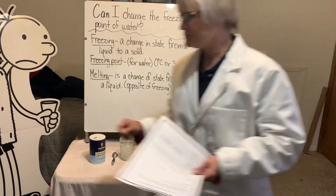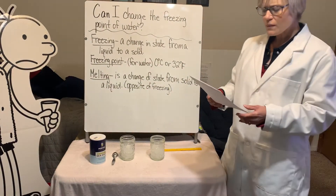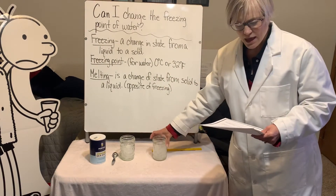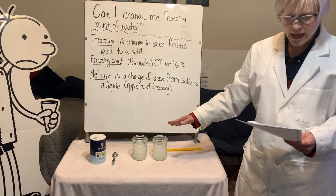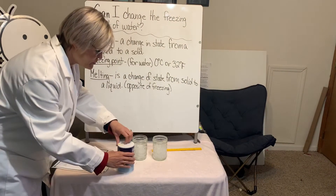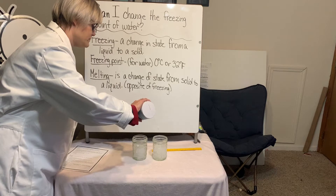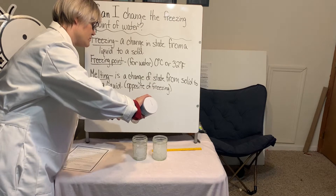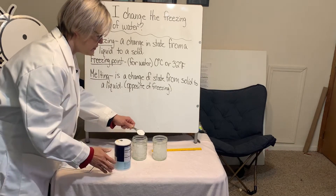Fill one cup halfway with only ice. Fill another cup halfway with the same amount of ice and add one tablespoon of salt. I've got my tablespoon and I'm going to add my salt — hopefully I don't spill it, that's one of my specialties! I've got a tablespoon of salt and I'm going to go ahead and pour that into the cup.